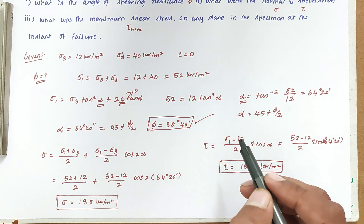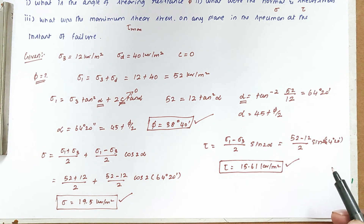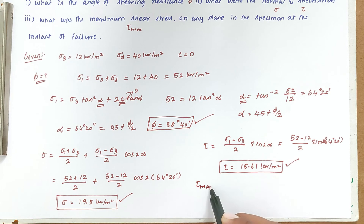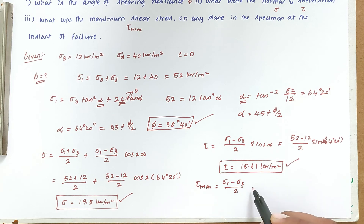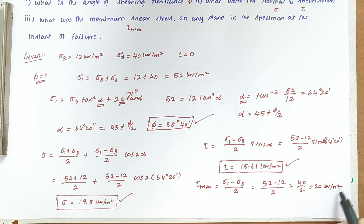To summarize: φ = 38°40', normal stress σ = 19.5 kN/m², and shear stress τ = 15.61 kN/m². Finally, the maximum shear stress τ_max = (σ1 − σ3)/2 = (52 − 12)/2 = 20 kN/m². This is the third answer. Thank you, we will see the next video.